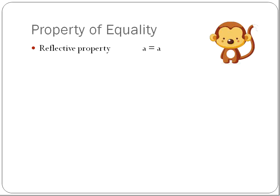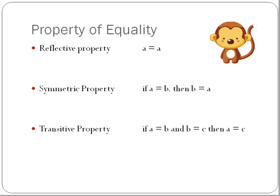Let's go ahead and break down the property of equality. The property of equality can be broken down into three different parts. The reflective property is when you've got something on one side and it's exactly the same on the other side. Very rarely used — we don't usually break down things into these three, but I just want to make you aware of them briefly.